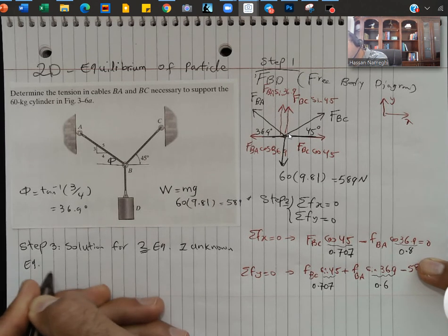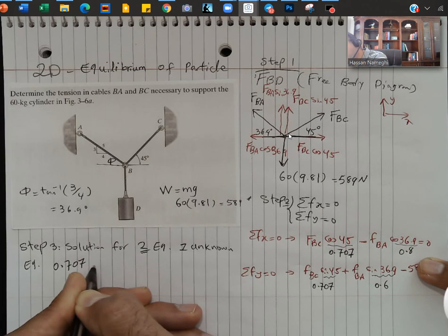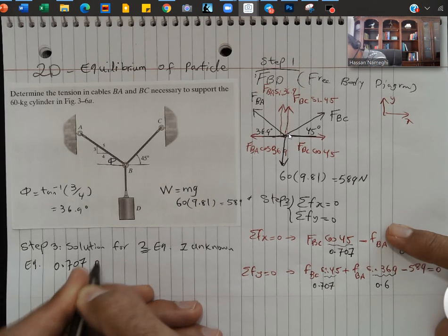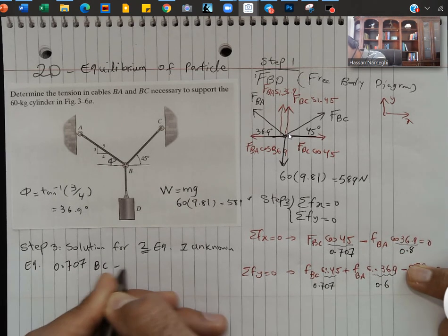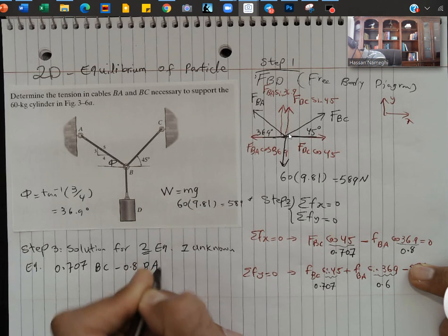I have 0.707 FBC. You can keep it as FBC or just shorten it to BC. So I'm going to call it BC minus 0.8 BA is equal to 0.